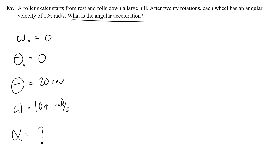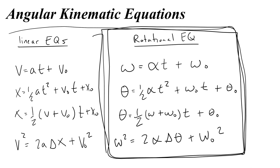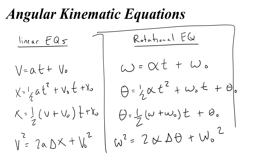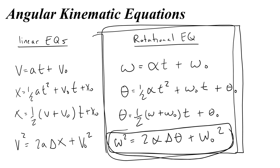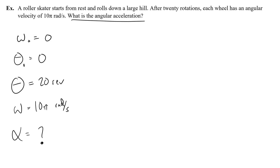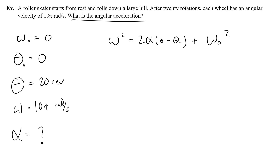Given this information and this unknown, I think about what equation has all of these things in it. I go back to my angular kinematic equations and think: what has all of the information I need — the givens and the unknown? In this problem I'm not given time and not asked to find time, which means I need to use the angular 'ain't got no time' equation: omega squared equals 2 times alpha times delta theta, which we can write as theta minus theta-naught, plus the initial angular velocity squared.